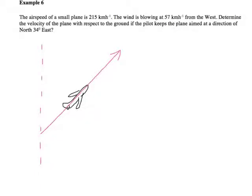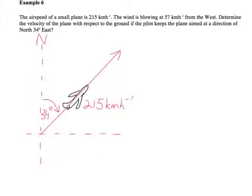We've got a small plane which is able to fly at 215km/h, and the direction that it's flying in is north, 34 degrees to the east. There's also a wind blowing from the west at 57km/h.